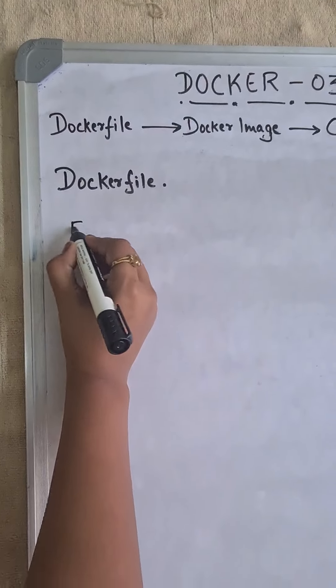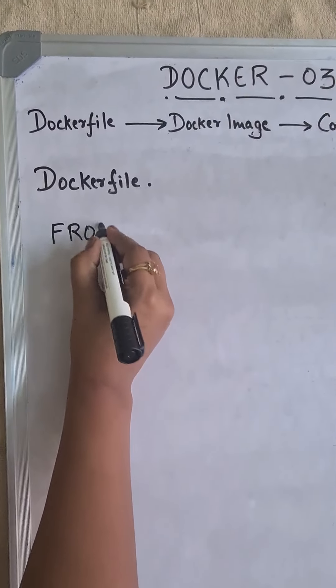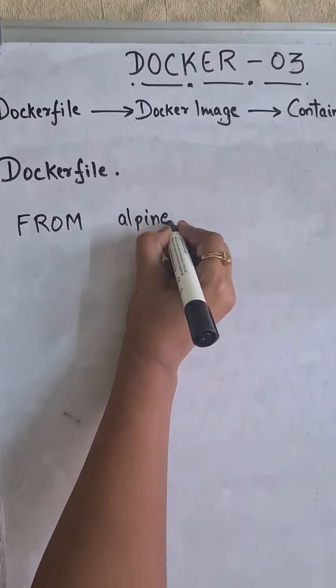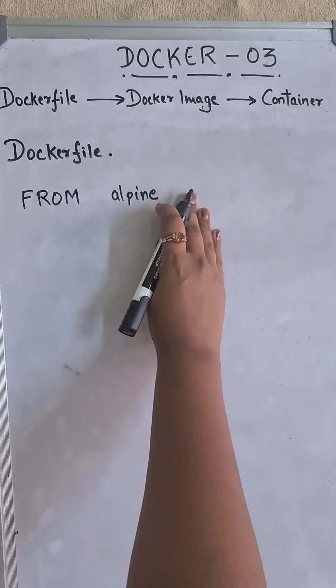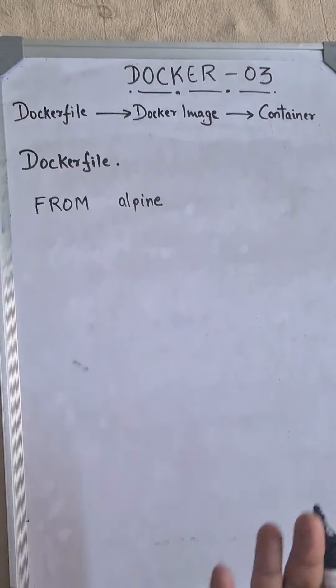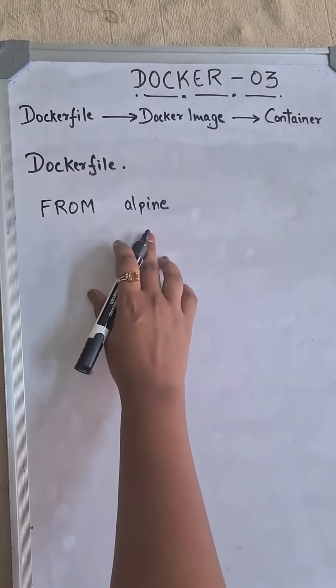So the first instruction is FROM. This will indicate my base image, and my base image is Alpine. So if you're not defining it as colon latest, by default this means it will take the latest image of Alpine.